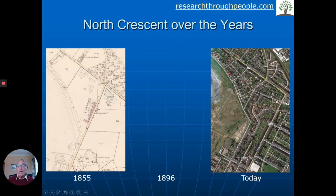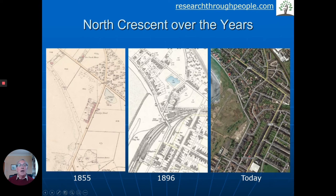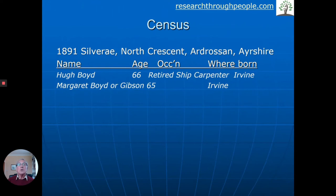One of the first things we did was look back in the past. Here's North Crescent in 1855 — no houses, just one remote building — so clearly the houses were built after 1855. By 1896, there's a row of houses including Silver Eye. The big factor that influenced that was the railway, which came to most places in the middle to latter half of the 19th century. That meant people could live in Glasgow and work there, while living on the west coast. The maps show the house must have been built in those 40 years.